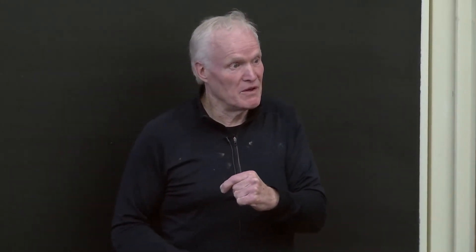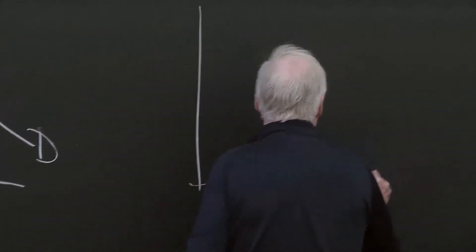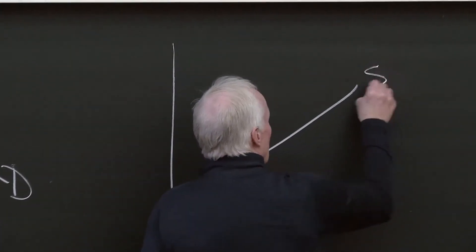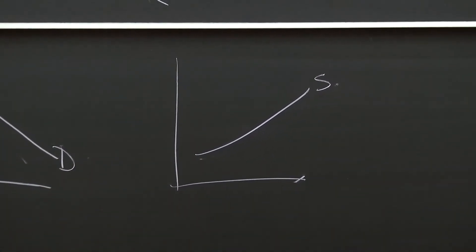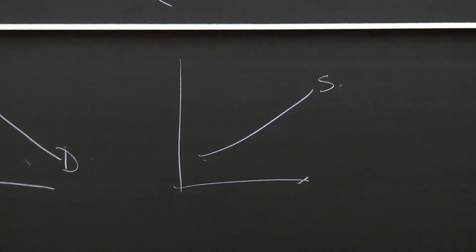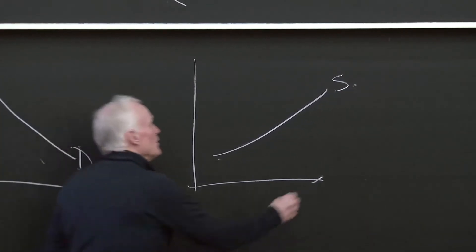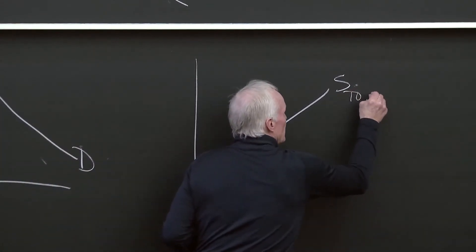But that's ignoring the fact that there's a market for those other inputs, and the consumer doesn't own those other inputs. So if all the consumers, so here's the world oil market. So here's the supply of oil to the U.S. How would we get the supply of oil to the U.S.?